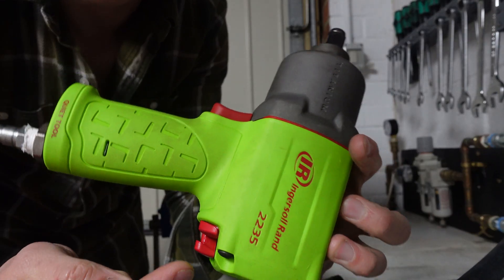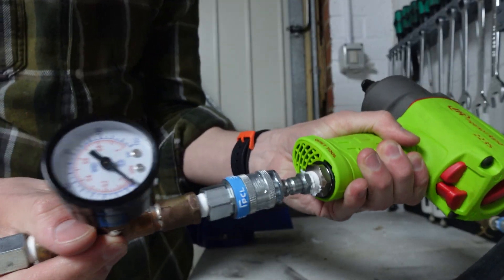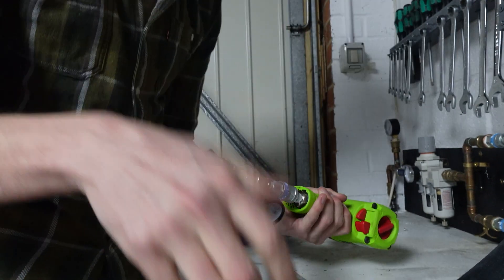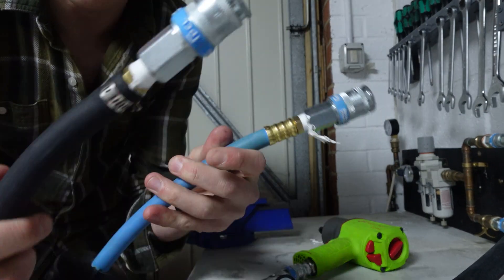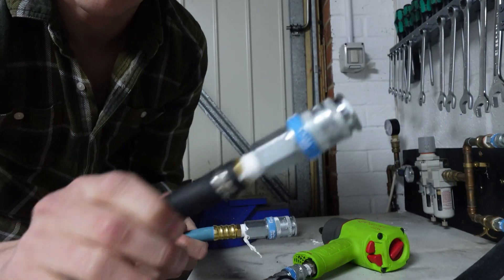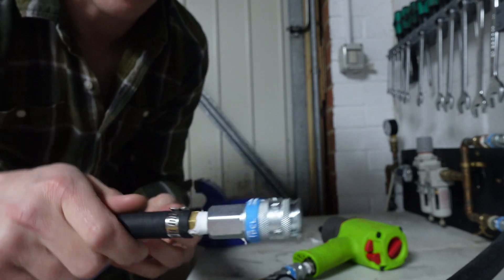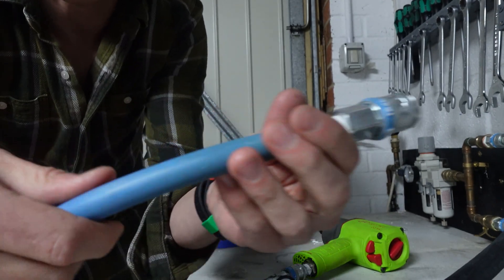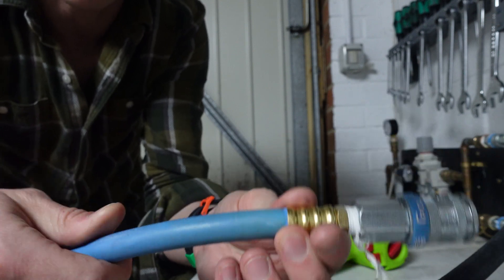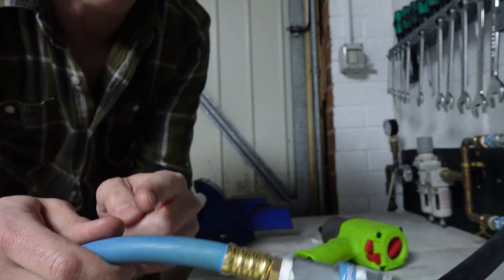So first we'll try the impact wrench. So we'll get the pressure measuring tool on the end and I've got two different lines here. This one's about four meters long, three-eighths of an inch bore, and this one's about 15, 16 meters long, again three-eighths of an inch bore.